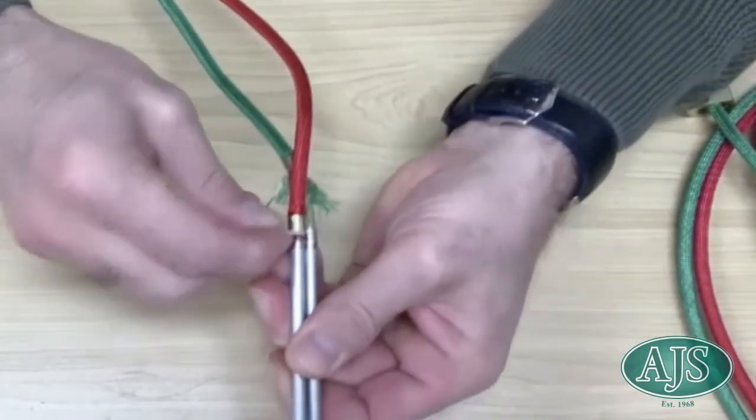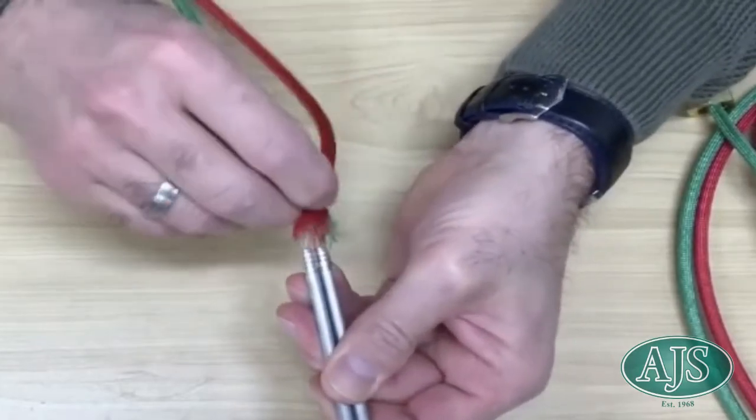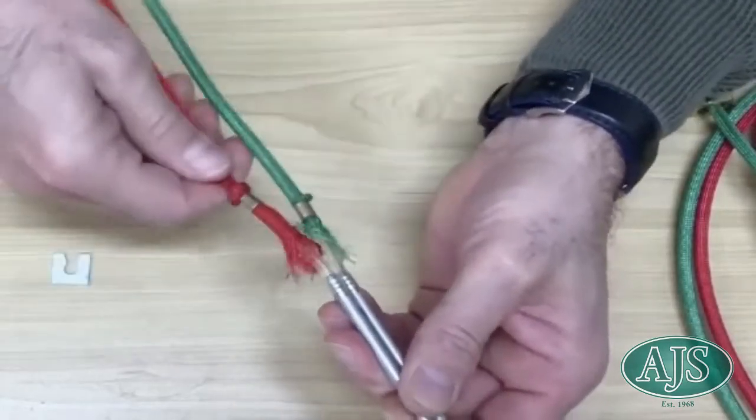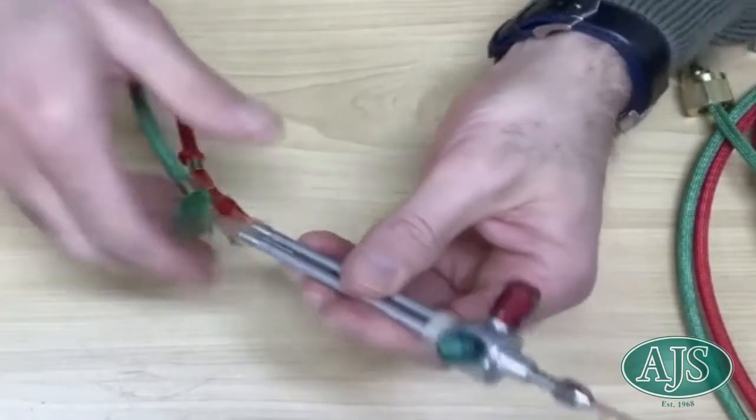If for some reason you are unable to remove the brass ferrule with a ferrule tool you can cut them off with a fine saw blade or even a cutting tool.